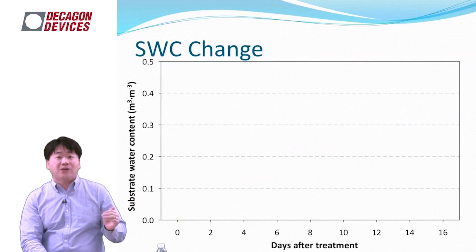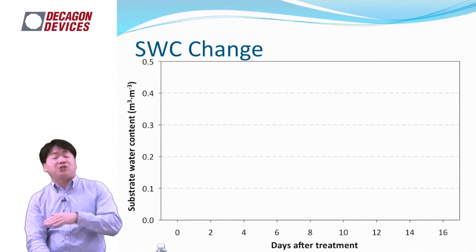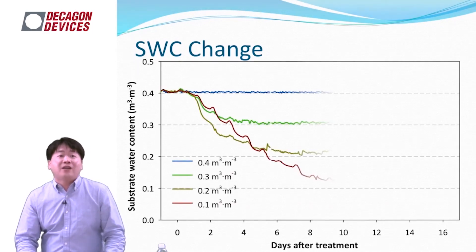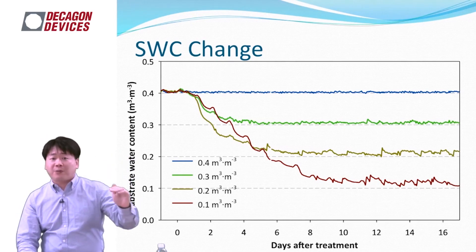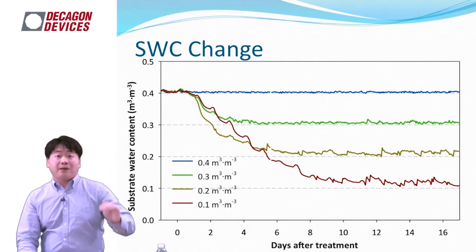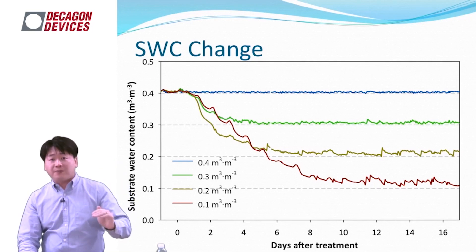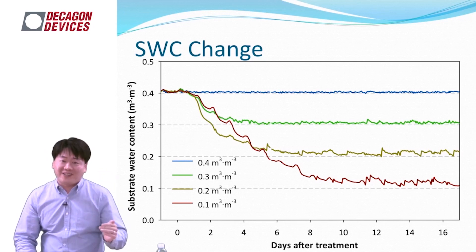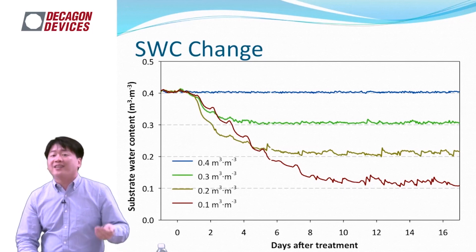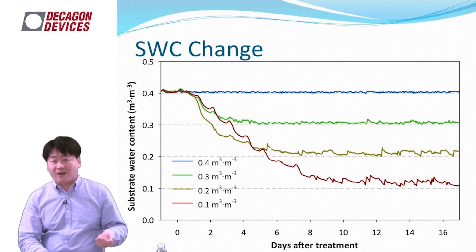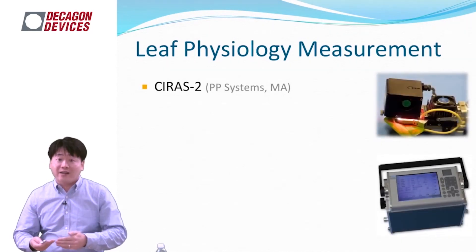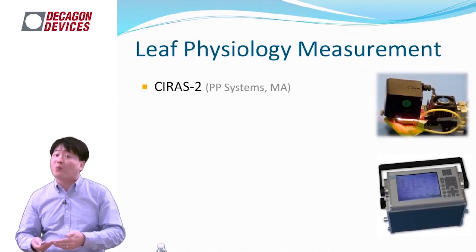This graph shows how the treatment worked. On the x-axis is time, and on the y-axis is substrate water content. As you can see, each treatment at 40%, 30%, 20%, and 10% shows very distinct and clear treatment effects on substrate water content. I wanted to show that this method was very effective for establishing substrate water content treatments. At the same treatment points, I also measured how plants acclimate or respond to these substrate water content levels.